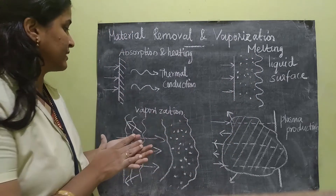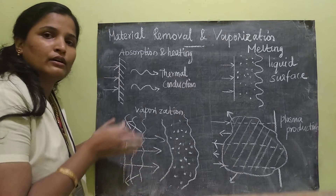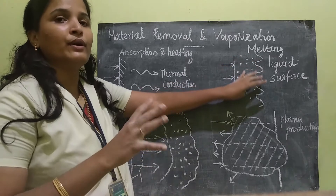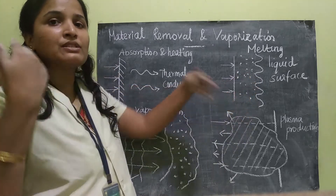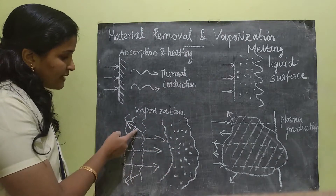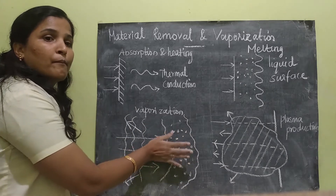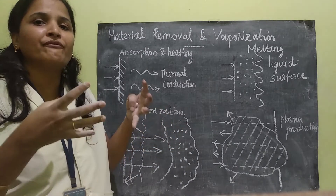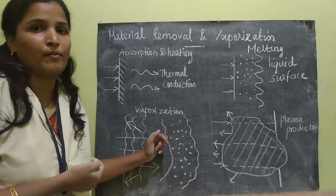The next process is vaporization. If I keep on showing the laser towards the material, the liquid state will have a number of vapors inside it. The vapors will try to escape from the material. This diagram shows the vapor or droplet escaping from the liquid material. Once vaporization happens, it will be in a very molten state — very loose — and at this stage, a hole is formed.